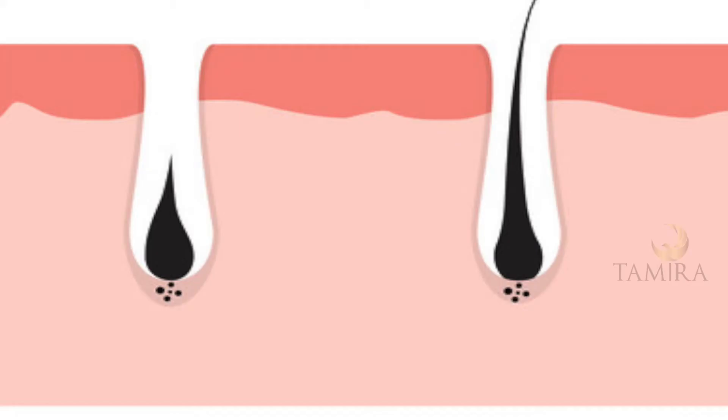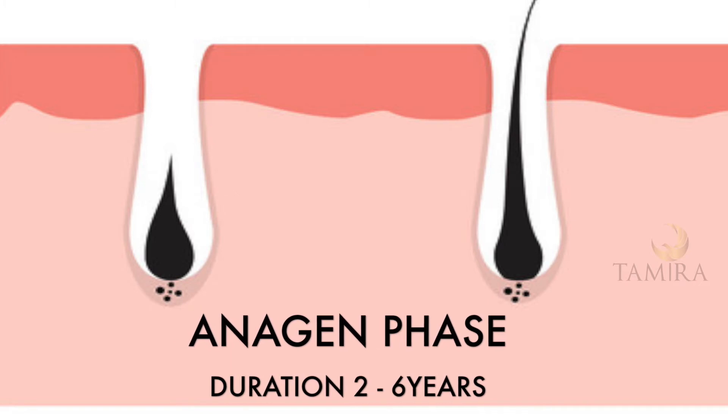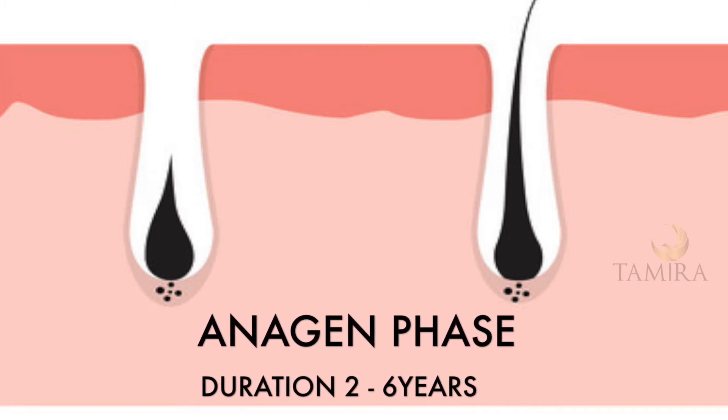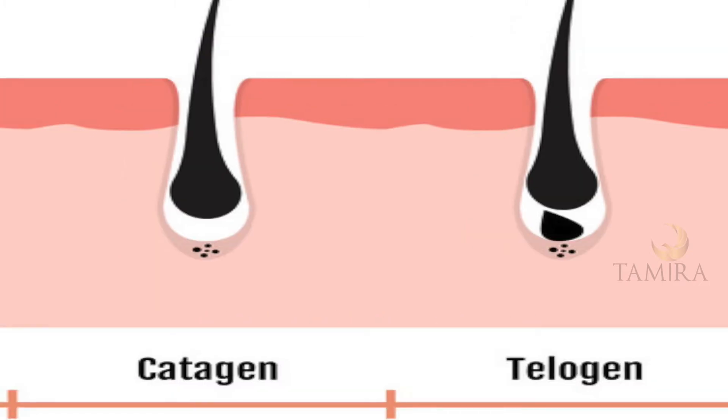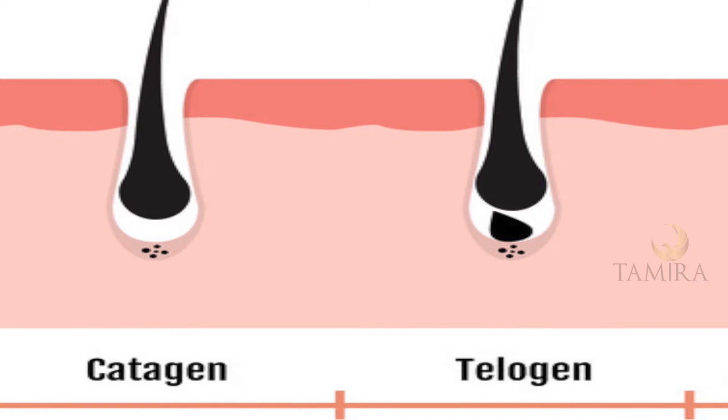Alongside anatomy, you also need to know about the growth cycle of the hair. Hair grows in three cycles: there is an anagen phase which for scalp hair can last anywhere between two to six years, then a transition phase, and then a resting phase called the telogen phase.